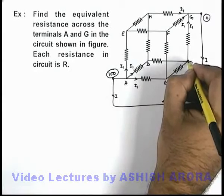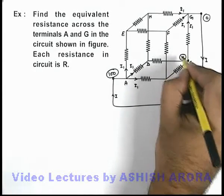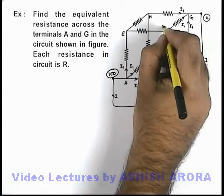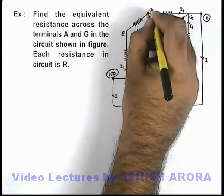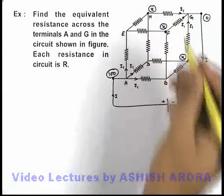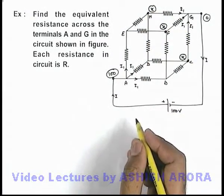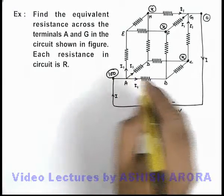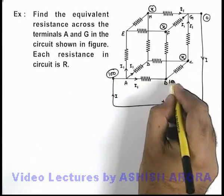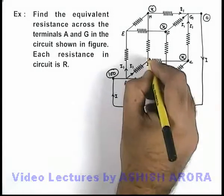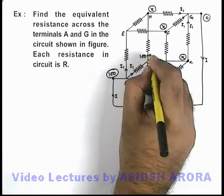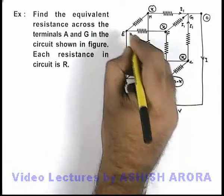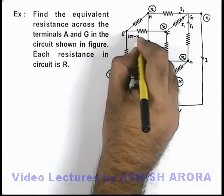So by symmetry, if potential at this junction is taken as x, this will also be x and this will also be x because the current in these 3 resistances is same. Similarly, as the same current is flowing here, potential here is 100. This must be 100 minus x. This is also 100 minus x, and this terminal E is also 100 minus x.